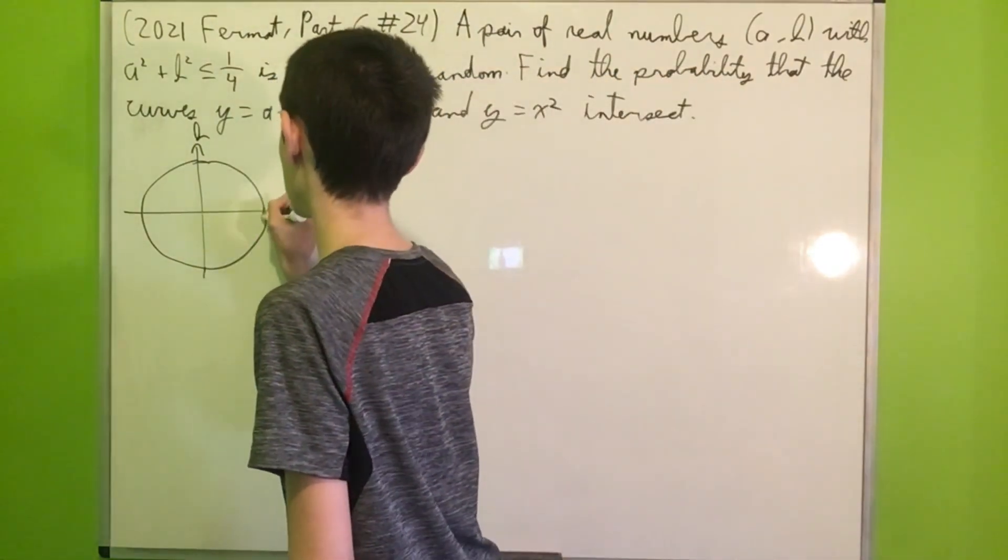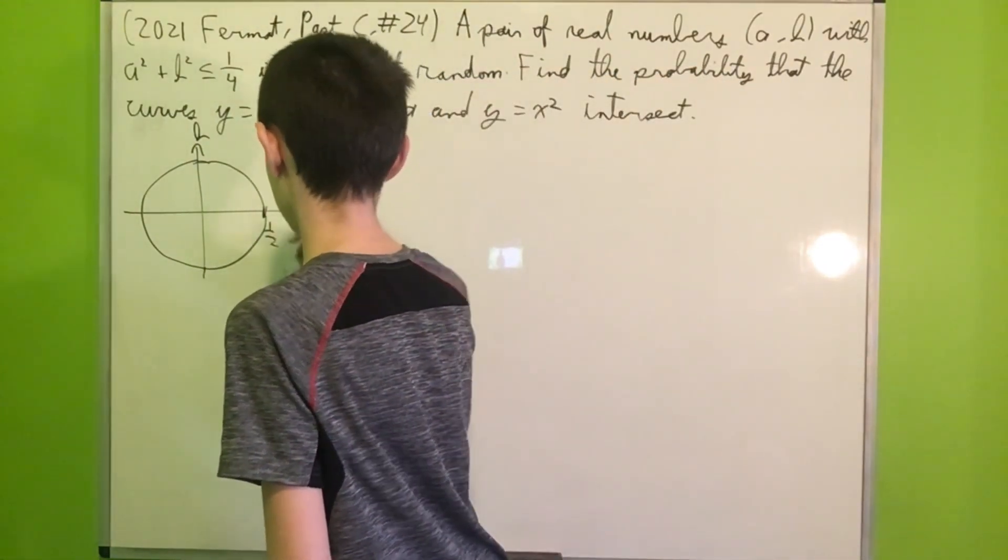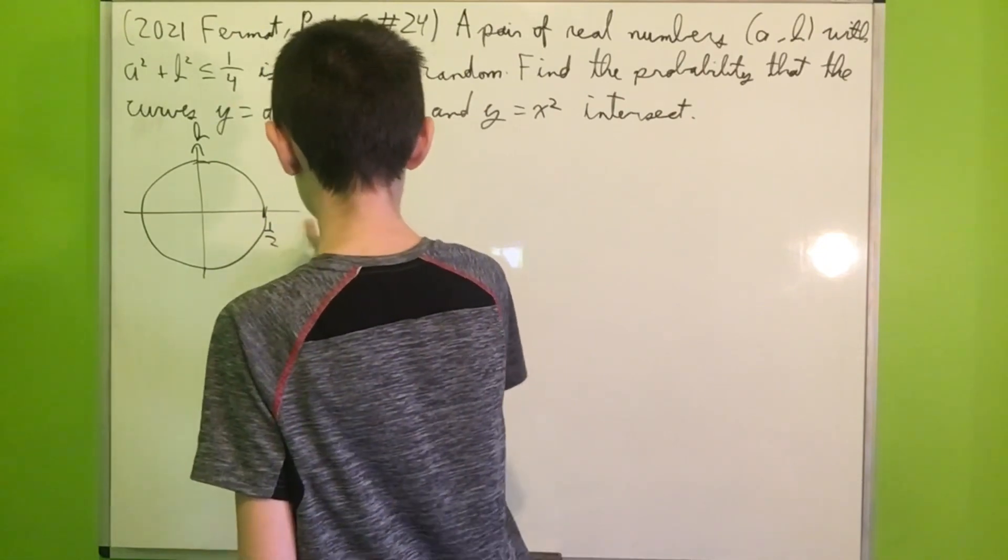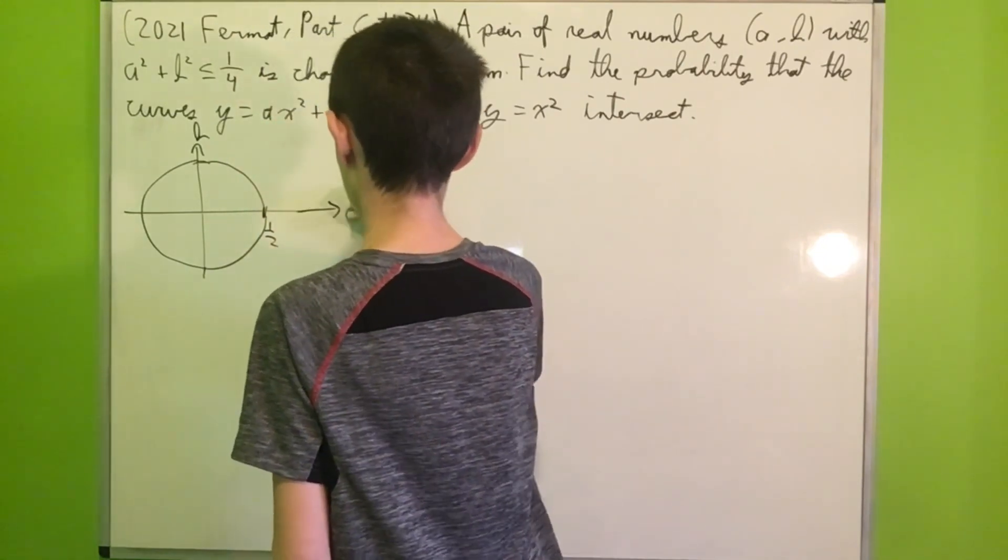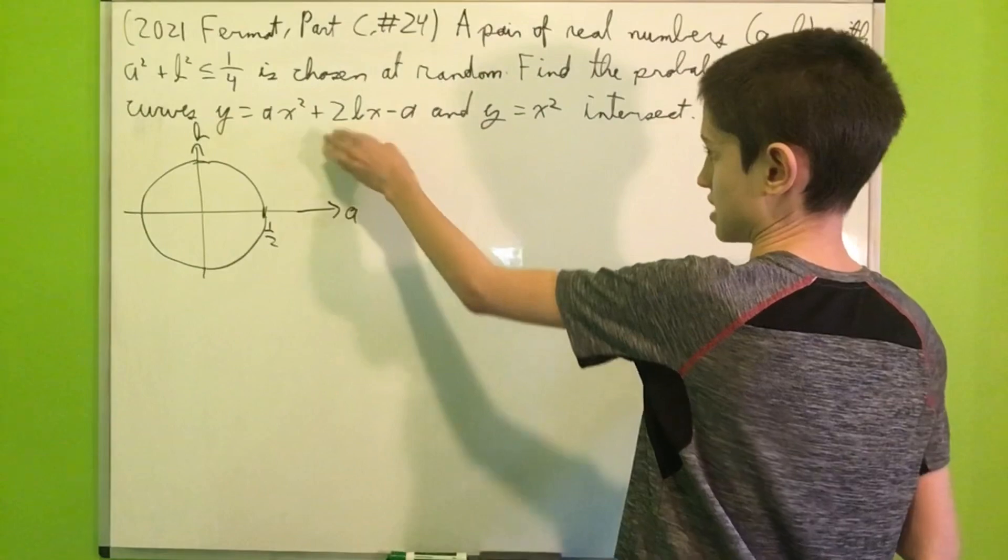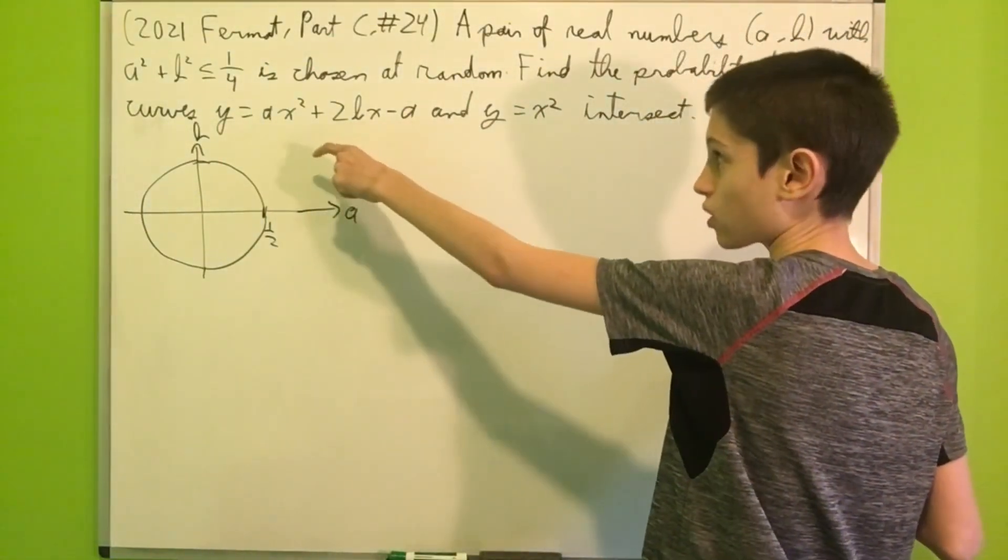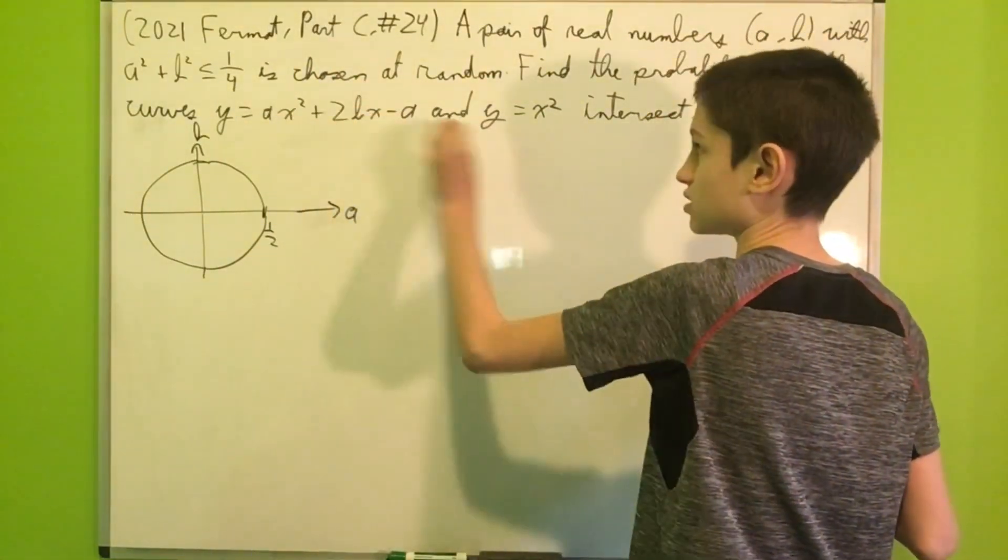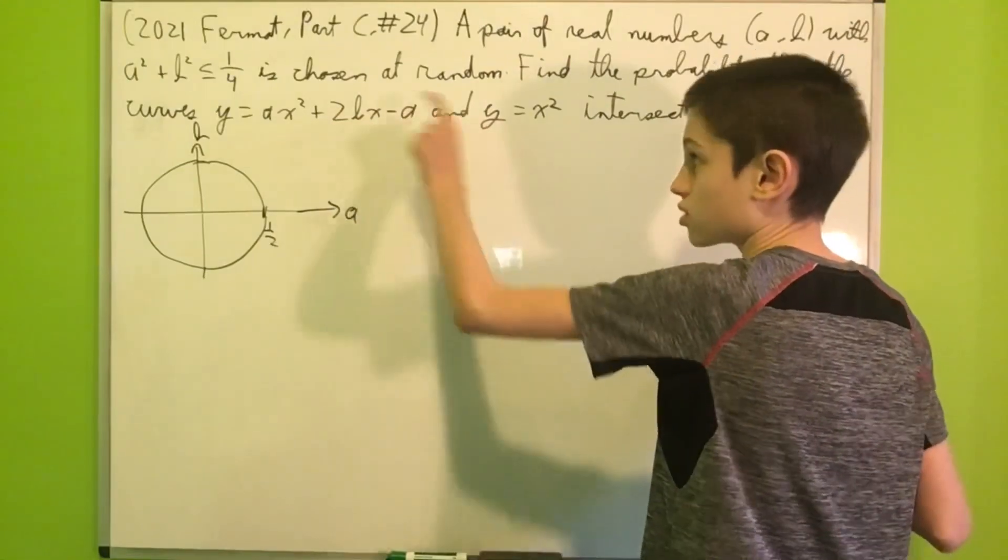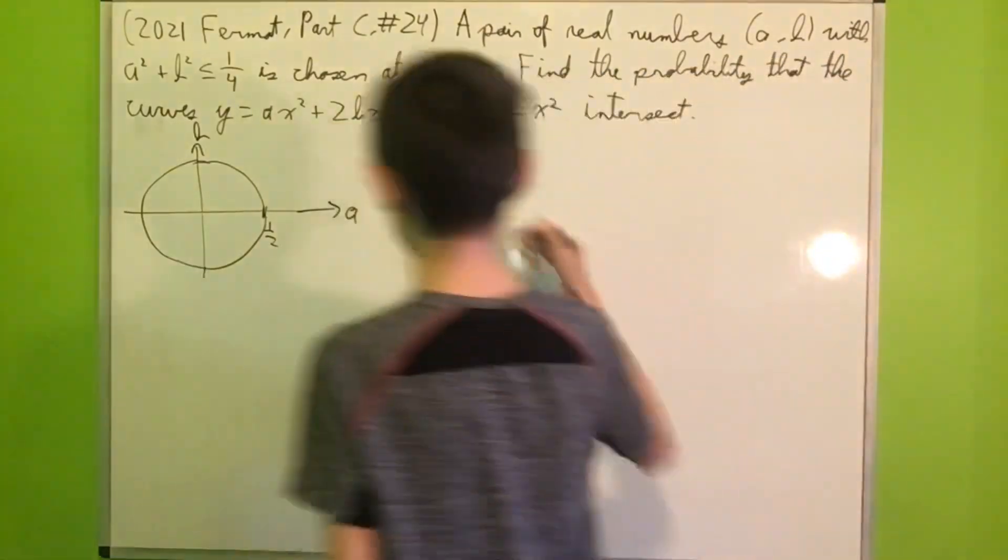And now a² + b² ≤ 1/4 is a circle centered at the origin with radius 1/2. And now, what we'll do next is we'll try to find another inequality such that these two curves intersect.